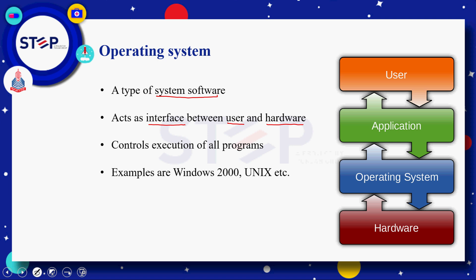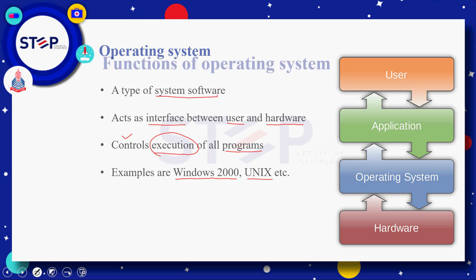آپ کے computer کے اندر جتنے بھی programs execute ہو رہے ہوتے ہیں آپ کا operating system ان کی تمام execution کو control کر رہا ہوتا ہے۔ ہمارے پاس اس کی examples میں Windows کے جتنے بھی versions ہیں، خاص طور پر Windows 2000 ہے، اس کے علاوہ Unix ہے، Linux ہے — یہ سارے operating system کی examples ہیں۔